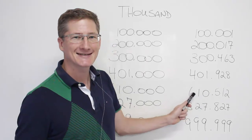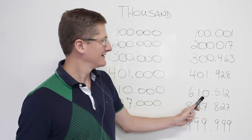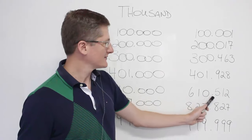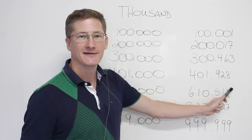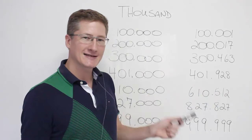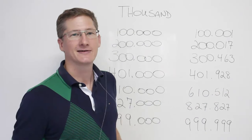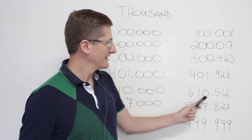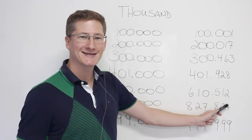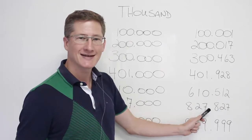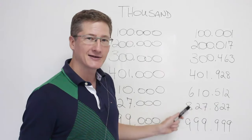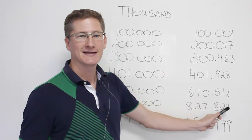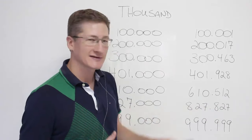Here we have 610. Here we have 512. So we have thousand. 610,512. 610,512. Here we have 827. And over here we have 827 again. So all we do is say thousand between the two. 827,827. Same numbers, just throwing in the thousand.